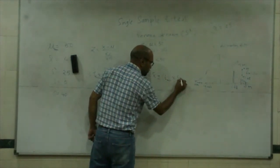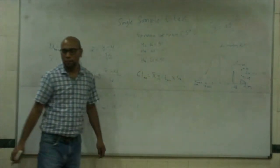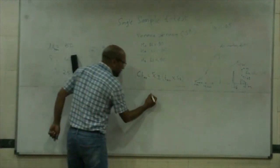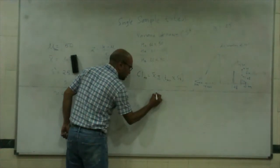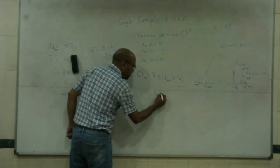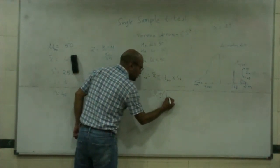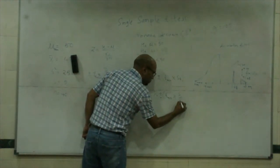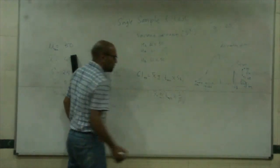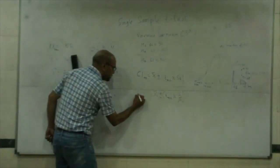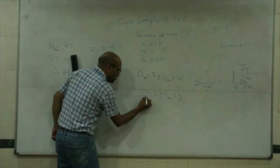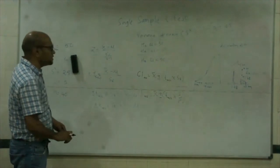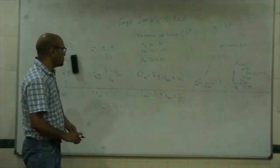If I want to elaborate it further, I can write it as plus minus T alpha by 2 times S over square root N. This is how I get confidence interval at 0.095. So for our example, what was the T value that we got some time back?